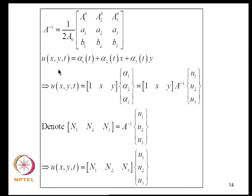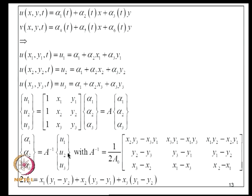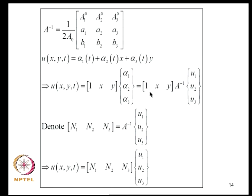Rewriting U = alpha_1 + alpha_2*X + alpha_3*Y as a row matrix times a column vector, and substituting A-inverse times [U1, U2, U3], we obtain U expressed in terms of nodal values U1, U2, U3 through interpolation functions. We denote N1, N2, N3 such that U = N1*U1 + N2*U2 + N3*U3. These functions serve as shape functions or interpolation functions.